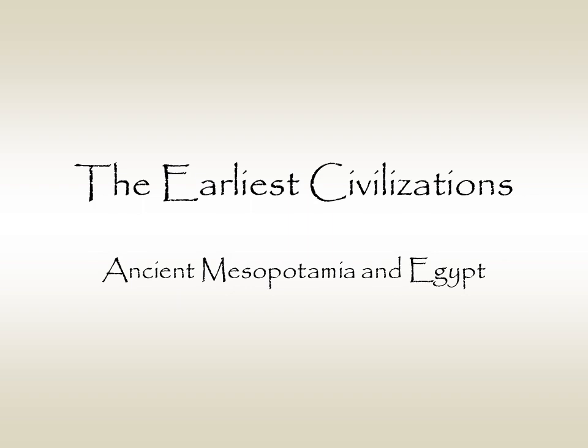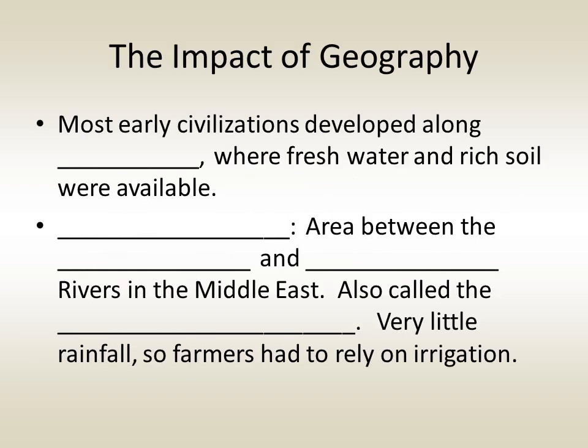The earliest civilizations arose in ancient Mesopotamia and Egypt. Most early civilizations developed along rivers, where fresh water and rich soil were available.